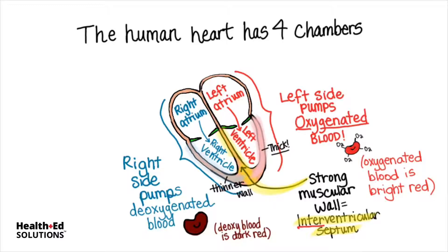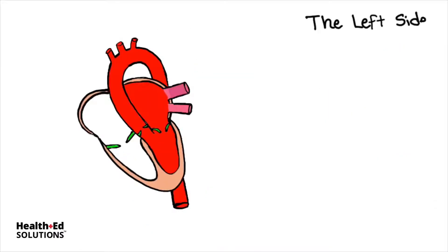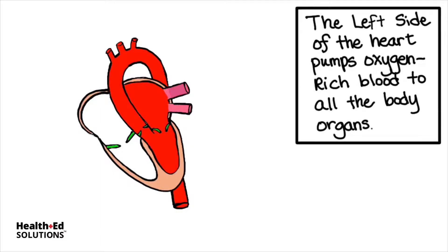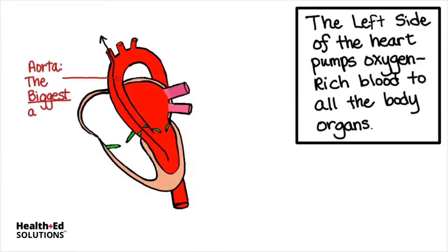So now you're probably looking at this and saying, well, how does blood get in here and how does blood get out of here for both sides of the heart? That's a great question and let's take a look at that. The left side of the heart pumps oxygen-rich blood to all the organs of the body. Blood is pumped up and out from the left ventricle via the largest blood vessel in your body, the aorta.